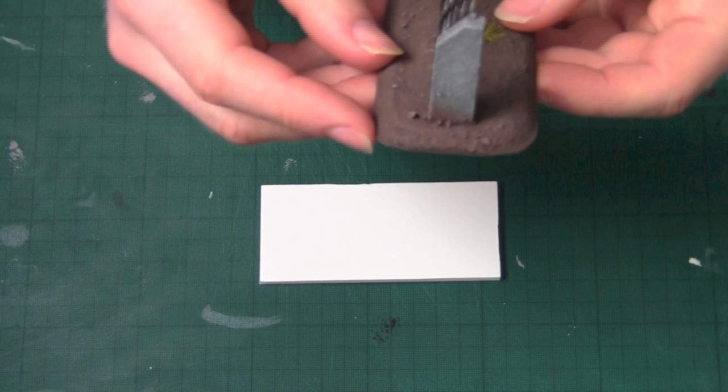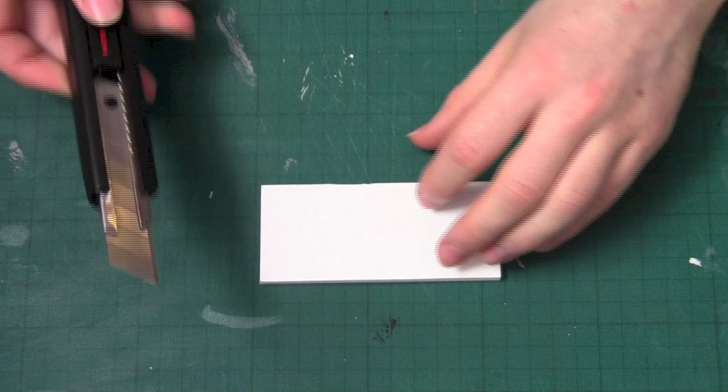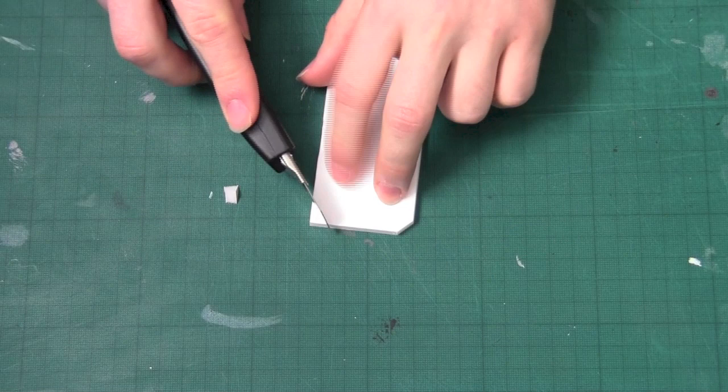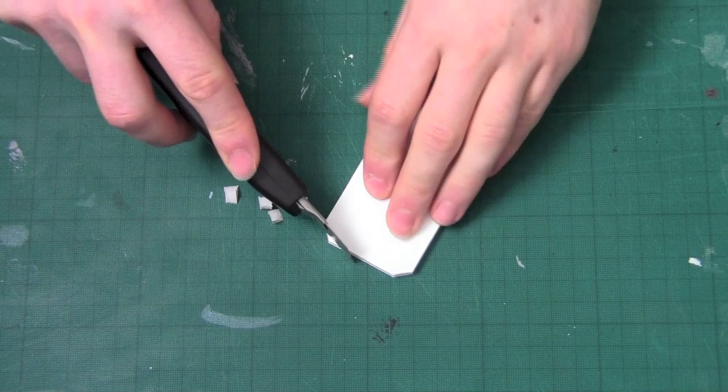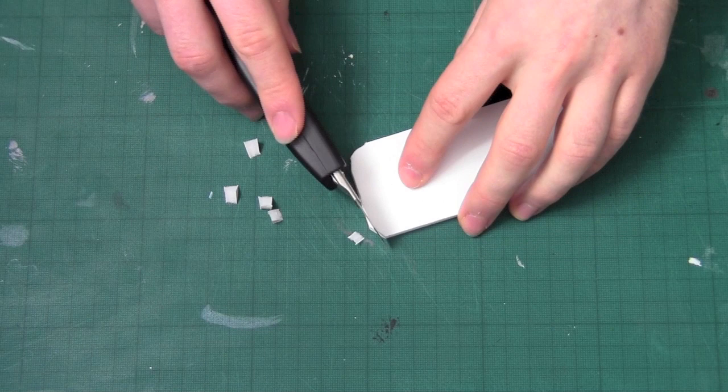Now that we have cut out the base we are going to work on rounding off the edges. To do this we are going to start by cutting small triangles out of each corner. The edges are still reasonably pointed so we're going to cut smaller triangles on those points, which gives it a nice round edge.